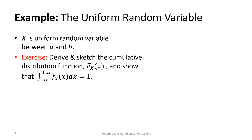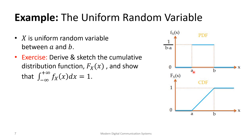One of the examples of random variables is the uniform random variable. It's very popular because it represents a fair distribution — x is uniform and takes values between a and b with equal probability. The PDF is constant, and because we must keep the area equal to one, the length is b minus a, so the height must be one over b minus a so that height times width equals one.